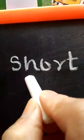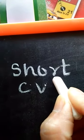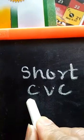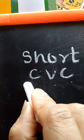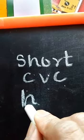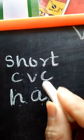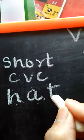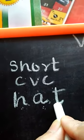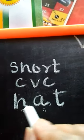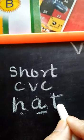And the rule of short vowels is C, V, C — consonant, vowel, consonant. Like H is a consonant, A is a vowel, T is a consonant again. So H-A-T, hat. The sound of A is the short 'a' sound: H-A-T, hat.